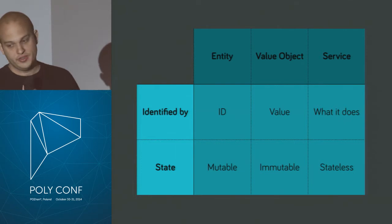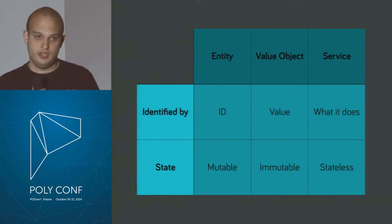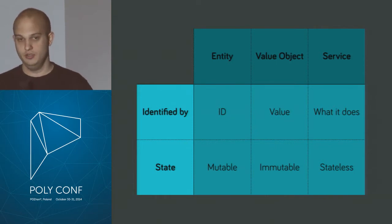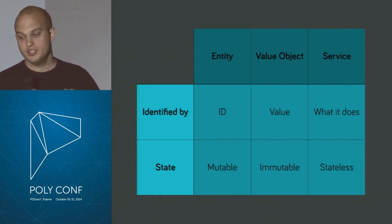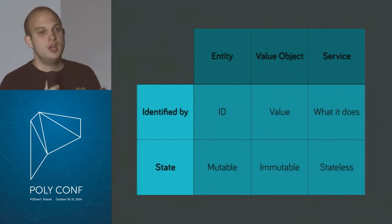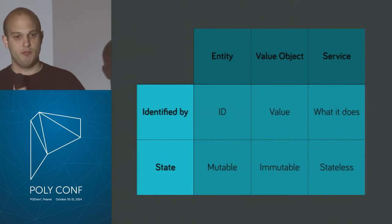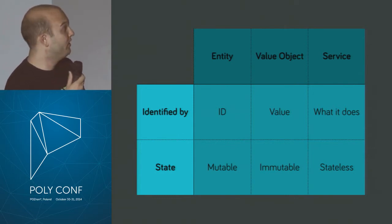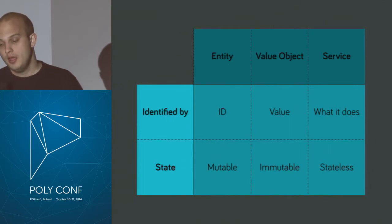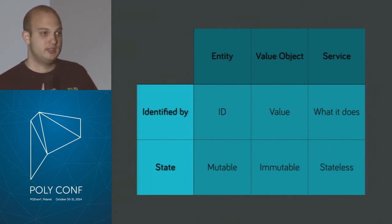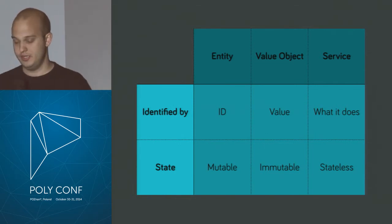A value object is different — it's identified only by its value and doesn't have its own identity. An address, in most cases, is a value object. If you change something about that value object, it becomes a different value object. If you change the street number, it's obviously not the same address anymore. Therefore, you can model it as being immutable, and that's important — I'll come back to that in a minute.